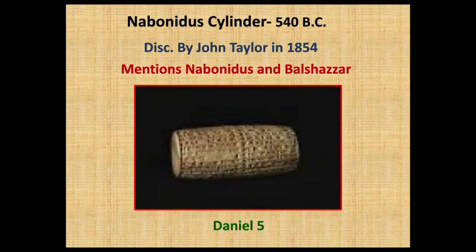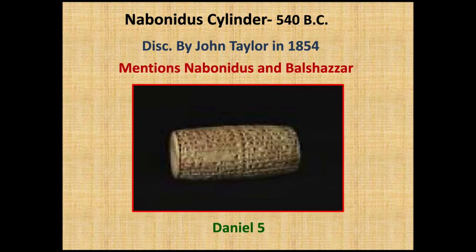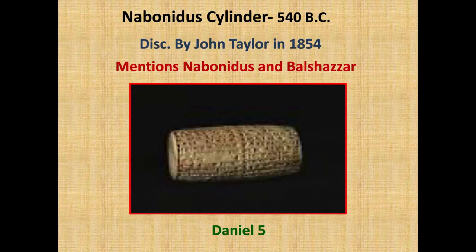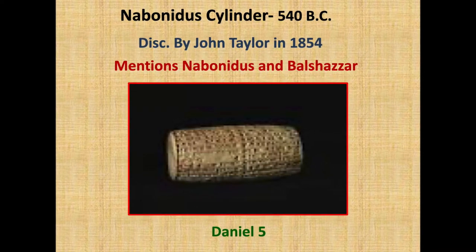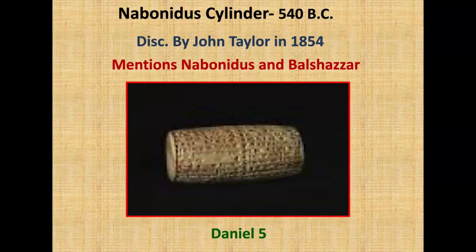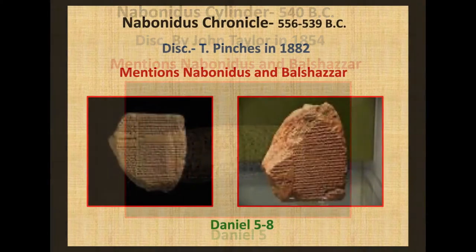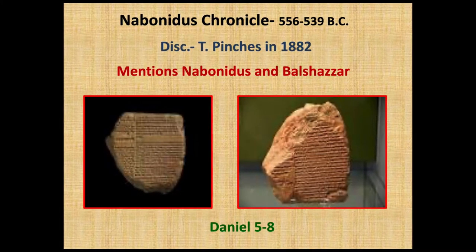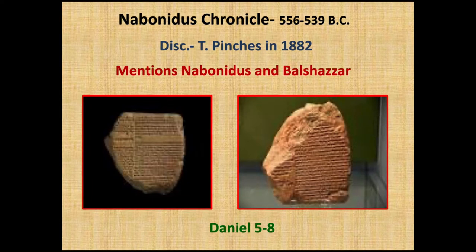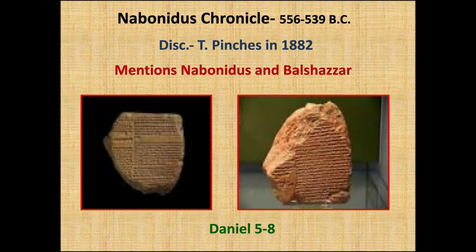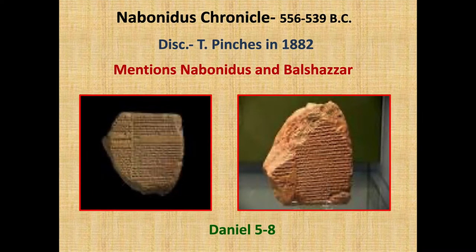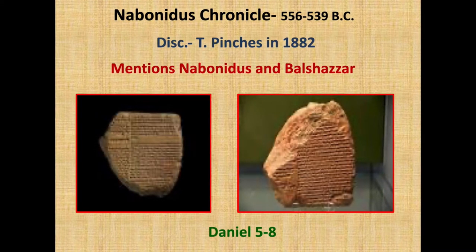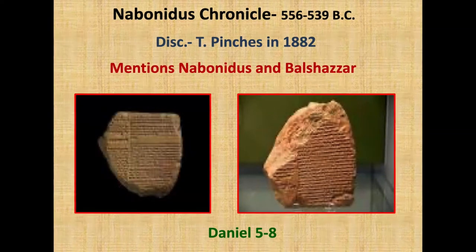The Nabonidus Cylinder from 540 BC was discovered by John Taylor in 1854. It mentions Nebuchadnezzar and Belshazzar, both mentioned in Daniel chapter 5. And then also the Nabonidus Chronicle, dating from around 556 to 539 BC, discovered in 1882, also mentions these two Babylonian kings — referenced in Daniel chapters 5 through 8.